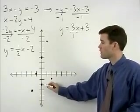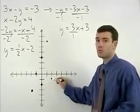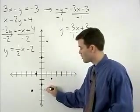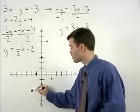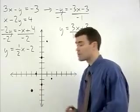For our second line, our slope of 1 half can move us up 1 and to the right 2, but it can also move us down 1 and to the left 2. So this is actually our point of intersection.